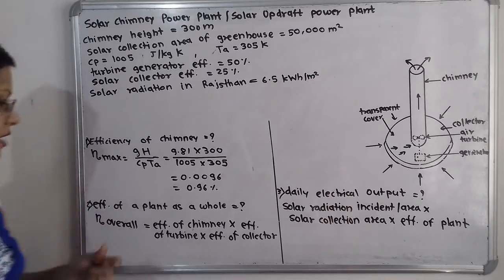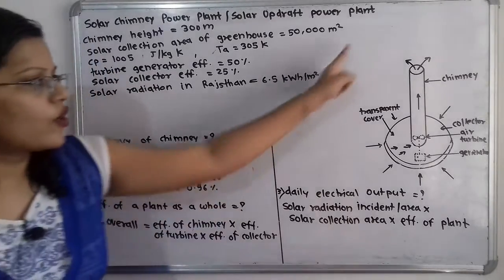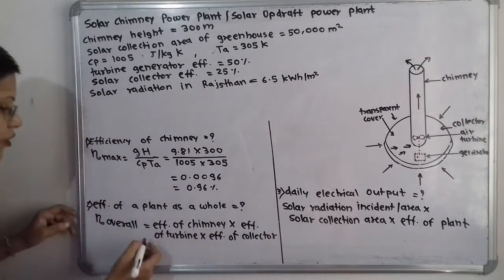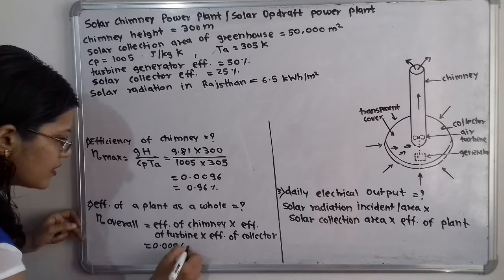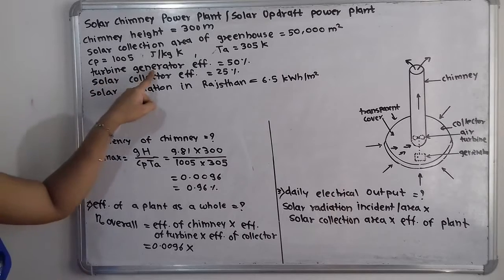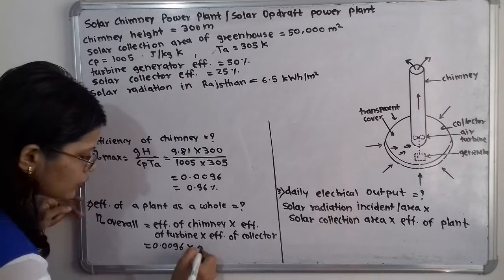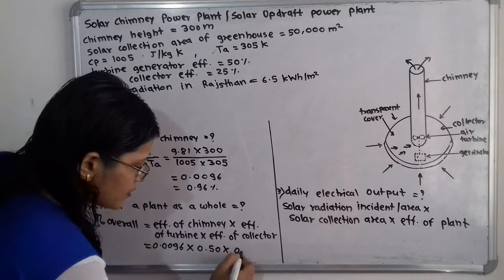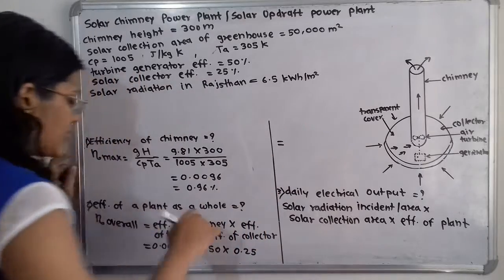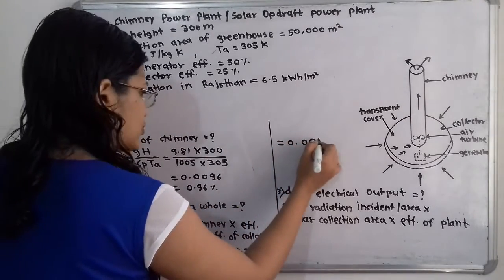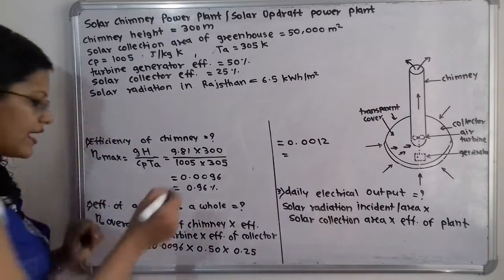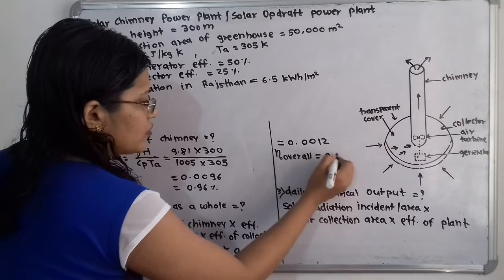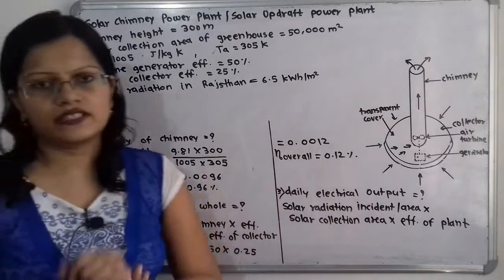For overall plant efficiency, we multiply the efficiency of the chimney, the turbine-generator, and the solar collector together: η_overall = 0.0096 × 0.50 × 0.25 = 0.0012. Converting to percentage, the overall efficiency of the plant is 0.12%.